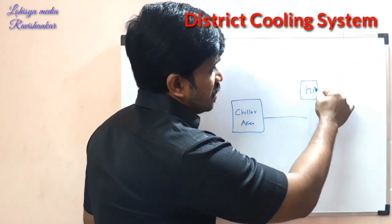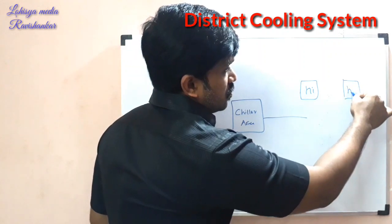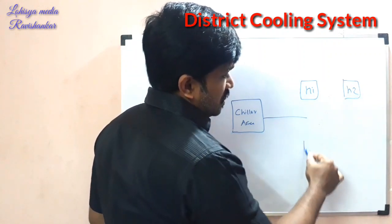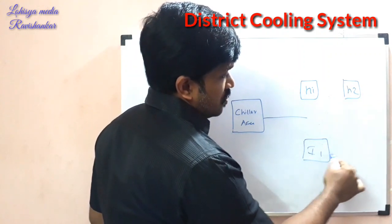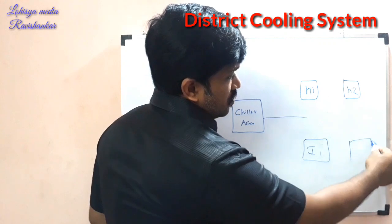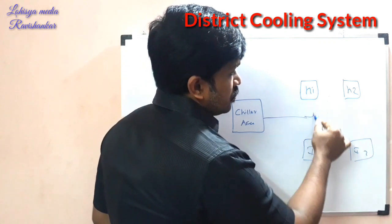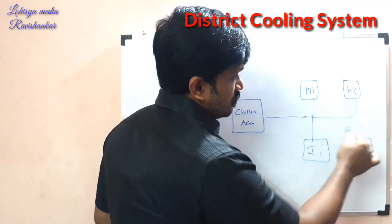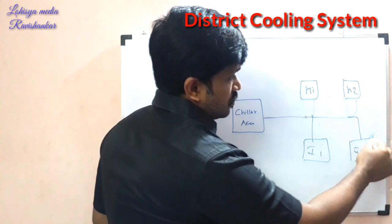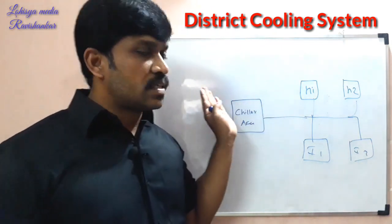This is house 1, house 2. This is industrial 1, industrial 2. If you do a network, you can distribute the chilled water as well.